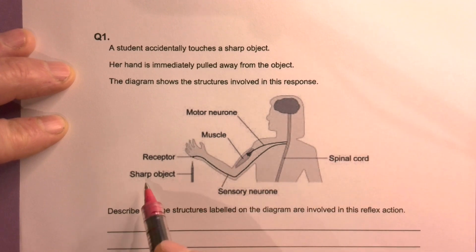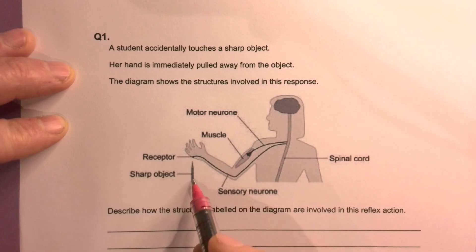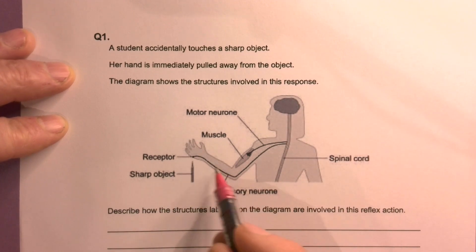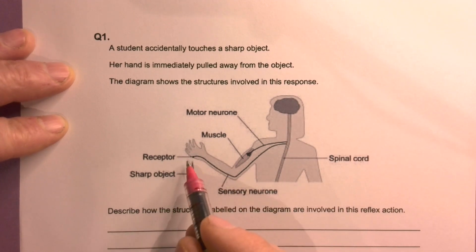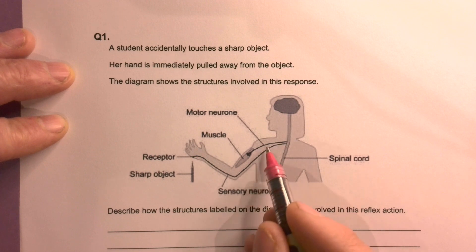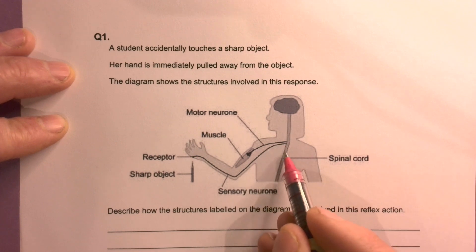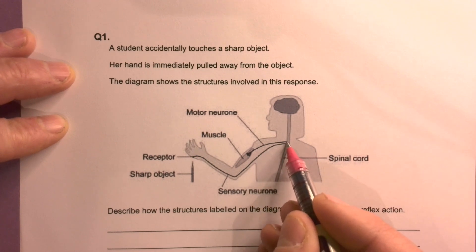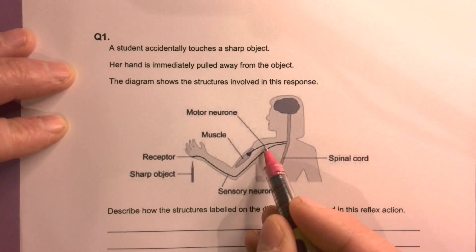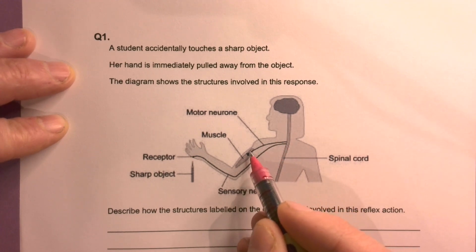We've got a sharp object, we've got a receptor cell, we've got a sensory neuron here to the spinal cord, and a motor neuron then back down here to the muscle.